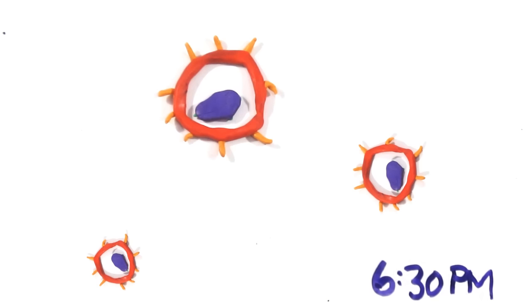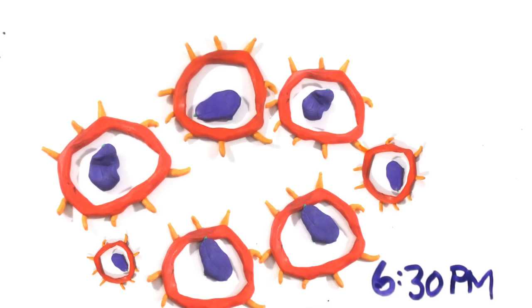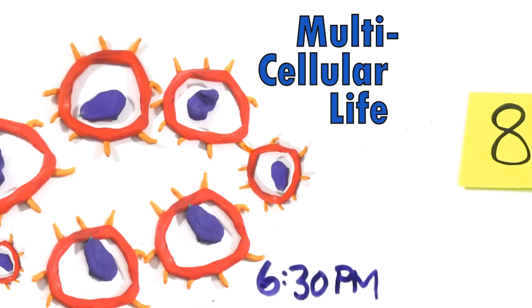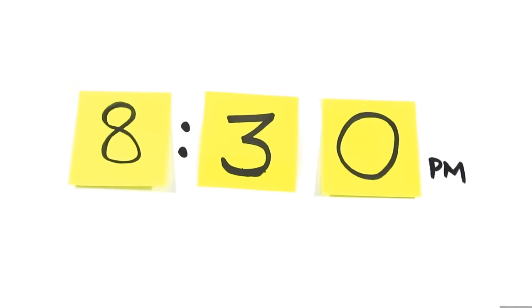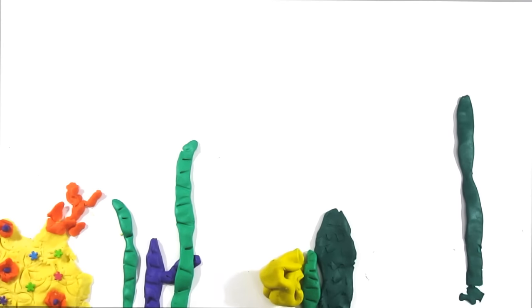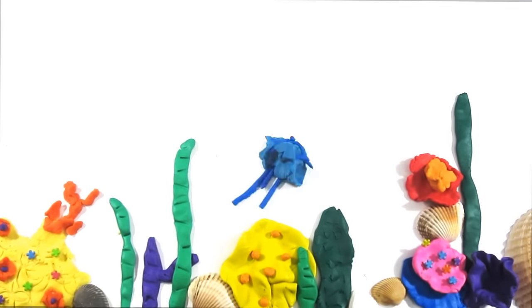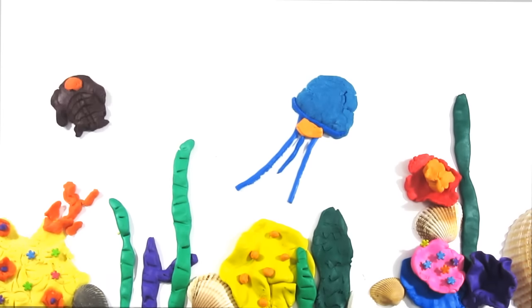At 6:30 p.m., these cells begin to form colonies, and thus the first multicellular life develops. But it isn't until 8:30 p.m. that sea plants appear, and 20 minutes later we suddenly see animal life erupt in an explosion of inventiveness.